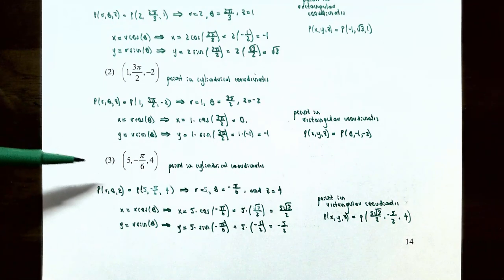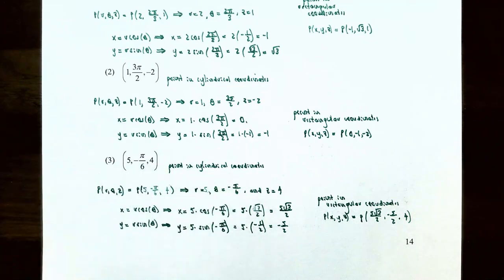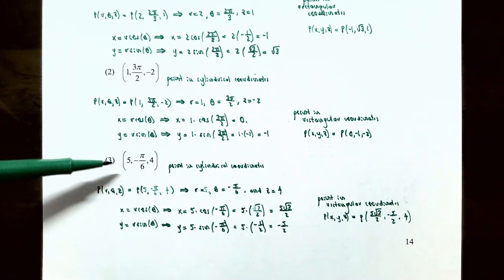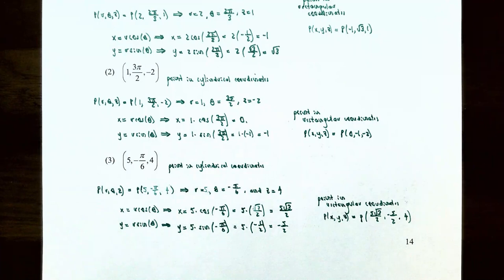Number three: the point (5, −π/6, 4) in cylindrical coordinates. Using x equals r cosine theta: x equals 5 times cosine(−π/6) equals 5 times root 3 over 2, which gives 5√3/2 for the x-coordinate. For y equals r sine theta: y equals 5 times sine(−π/6) equals 5 times negative one-half equals negative 5/2. The z-coordinate stays as 4. So the point (5, −π/6, 4) in cylindrical coordinates is the same as (5√3/2, −5/2, 4) in rectangular coordinates.